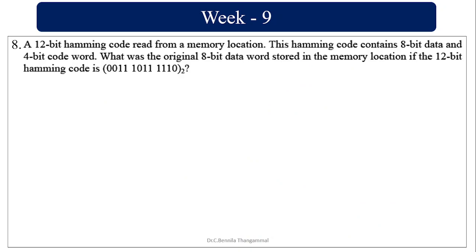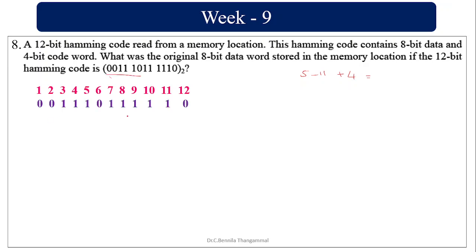A 12-bit Hamming code is given where 8 bits are data. The check bits are at positions 1, 2, 4, and 8. To find the message bits, cancel positions 1, 2, 4, and 8 — the remaining bits give the message: 1, 1, 0, 1, 1, 1, 1, 0.